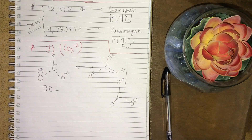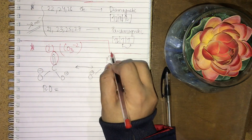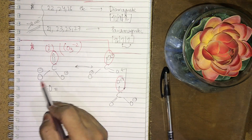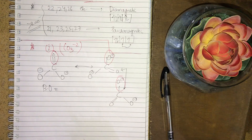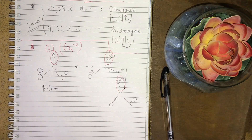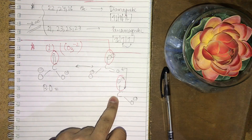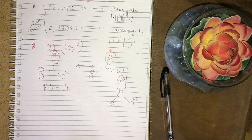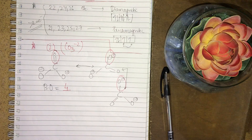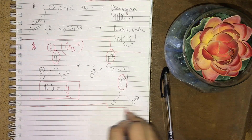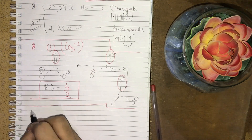To find the average, fix any one bond — I am fixing the top bond. Now count how many times that bond appears across all resonance structures: two bonds, one bond, one bond — a total of four bonds across three structures. So the bond order will be 4/3. We are simply calculating the average.